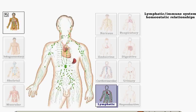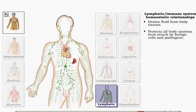The lymphatic and immune system helps maintain body homeostasis by draining fluid from body tissues. B cells, T cells, and antibodies protect all body systems from attack from foreign cells and invaders.